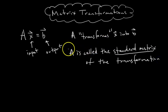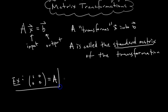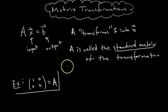Let's do an example. So let's say we're given an A that is the matrix 1, 0, 0, 0. Let's say this equals A. This is our standard matrix of some transformation. Then the question is, what does this do? What does this transformation entail?